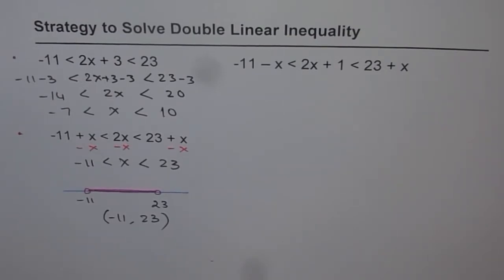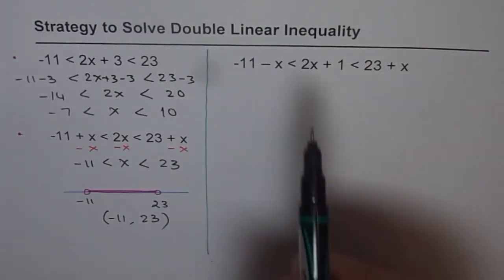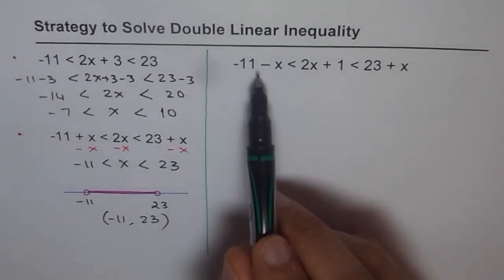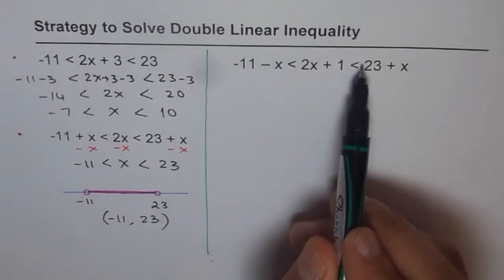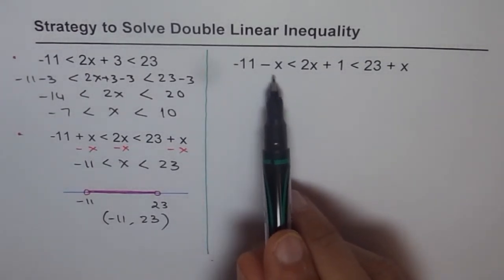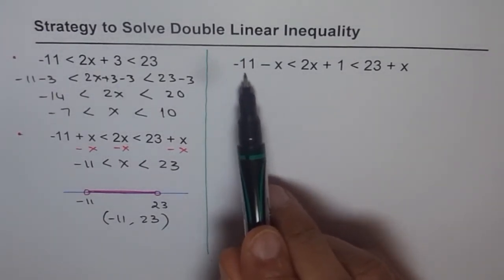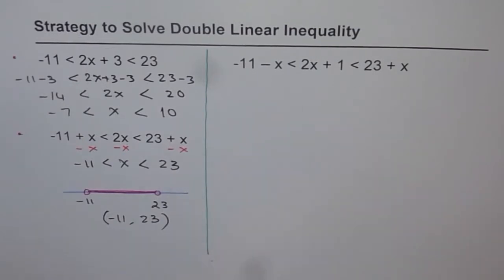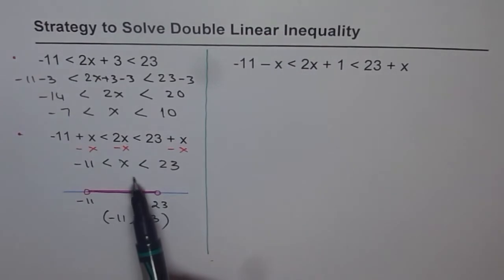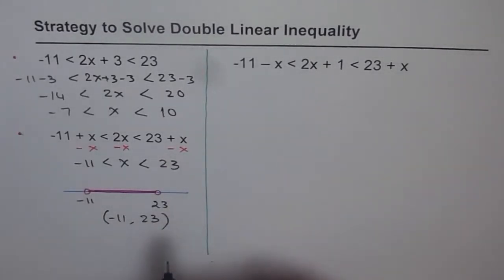Now let's discuss the third case, which is kind of typical. Here we have minus 11 minus x is less than 2x plus 1, which is less than 23 plus x. If I want to get rid of this x I have to add x at all places, but then I'll have x in two places. So there is no way to eliminate x from the sides as I was able to do for the second example. This is not possible here.